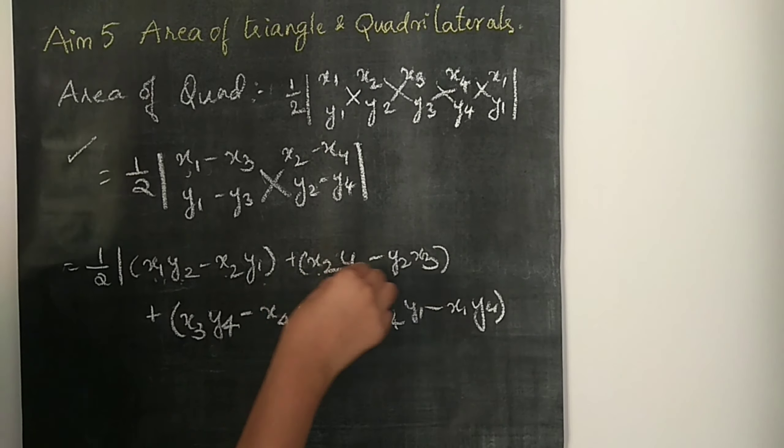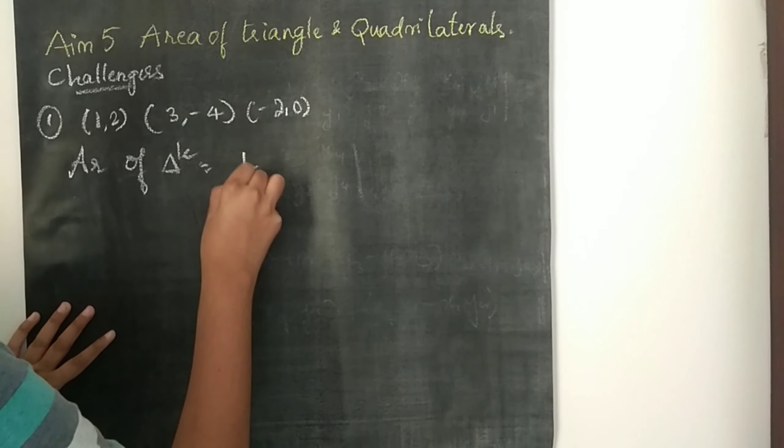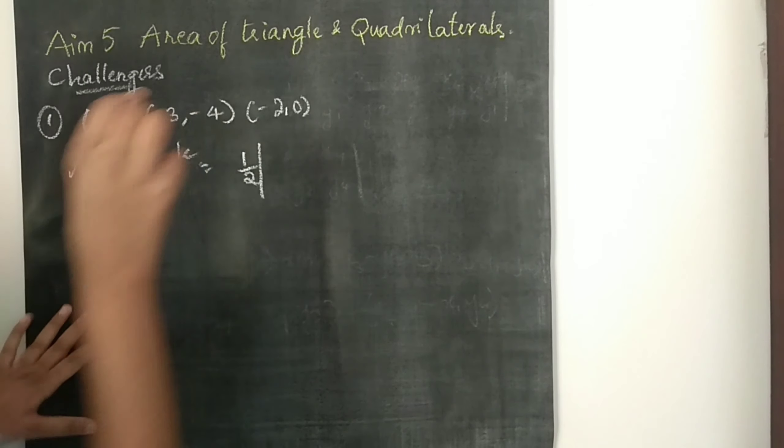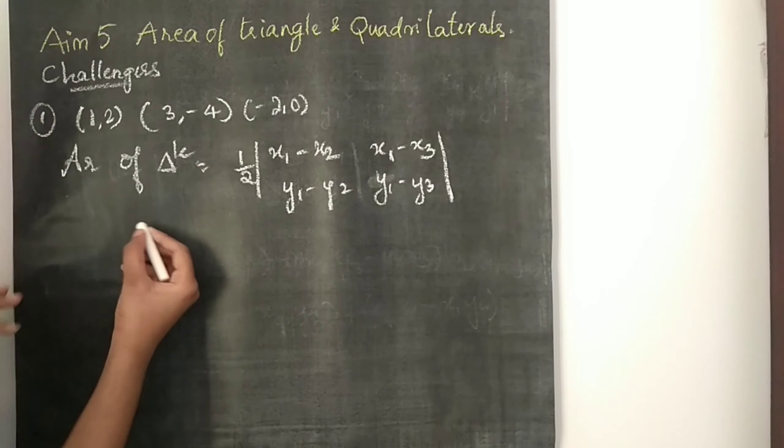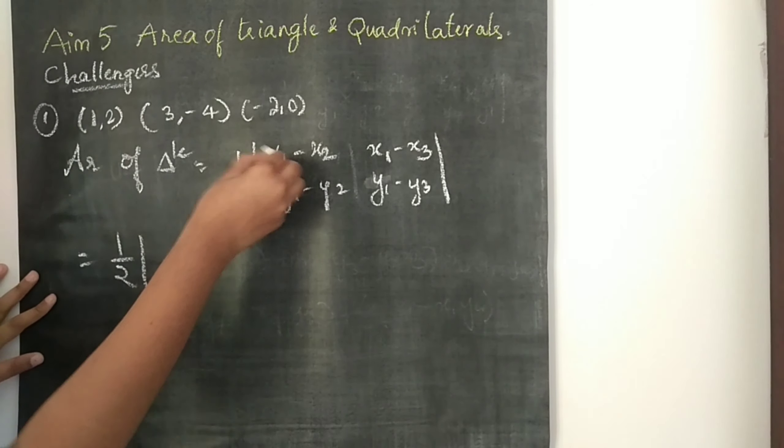Now we will discuss the challenges. First question: find the area of the triangle with points (1, 2), (3, −4), and (−2, 0). Let's find the area. What formula will we use? The simplest one. So the formula is: half into (x1 minus x2) into (x1 minus x3) minus (y1 minus y2) into (y1 minus y3). Now we will solve.